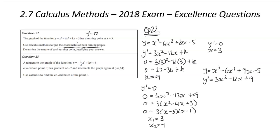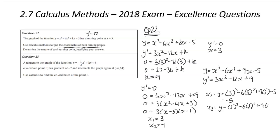Now that we've got the x values, we've been asked specifically for the coordinates, so we need y values too. Substituting x equals 3: y equals 27 minus 54 plus 27 minus 5, which gives negative 5. And substituting x equals 1: y equals 1 minus 6 plus 9 minus 5, which gives negative 1. So we've got our two coordinates: (1, negative 1) and (3, negative 5).